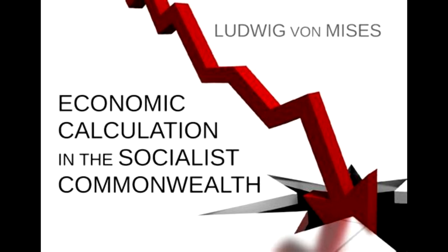Moreover, the mind of one man alone, be it ever so cunning, is too weak to grasp the importance of any single one among the countlessly many goods of higher order. No single man can ever master all the possibilities of production, innumerable as they are, as to be in a position to make straightway evident judgments of value, without the aid of some system of computation. The distribution among a number of individuals of administrative control over economic goods in a community of men who take part in the labor of producing them, and who are economically interested in them, entails a kind of intellectual division of labor, which would not be possible without some system of calculating production and without economy. The second condition is that there exists, in fact, a universally employed medium of exchange, namely money, which plays the same part as a medium in the exchange of production goods also. If this were not the case, it would not be possible to reduce all exchange relationships to a common denominator.